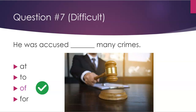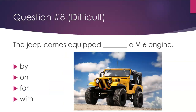Number eight: The jeep comes equipped ___ a V6 engine. The options are: by, on, for, with. The answer is: with.